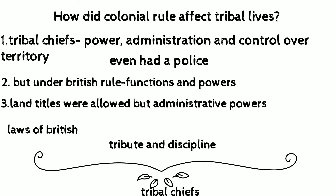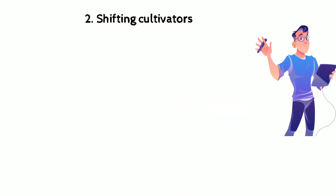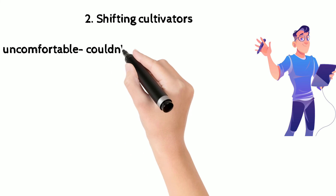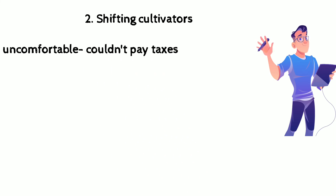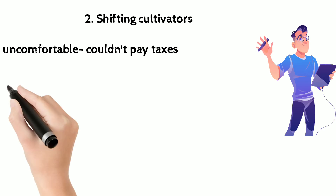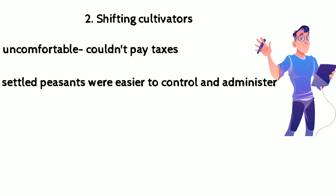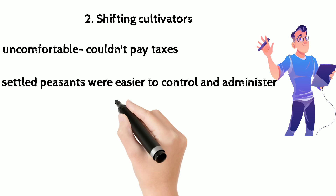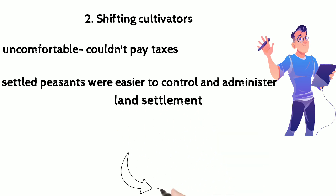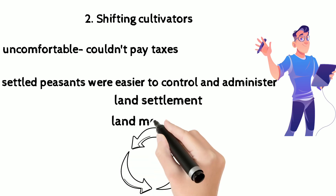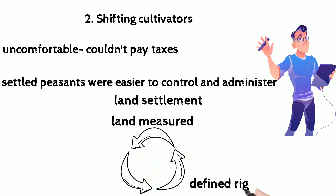How did colonial rule affect the shifting cultivators? The British were uncomfortable with these people because they couldn't pay taxes and the British couldn't trace them as they moved from place to place. Settled peasants were easier to control and administer. The main purpose of the British was to get revenue, so they introduced land settlement — in this, land was measured, the rights of every individual were defined, and a fixed revenue was demanded for the state.